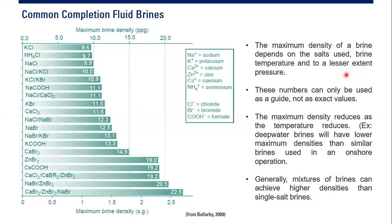The salts govern the maximum density of the brine, along with temperature and pressure to a lesser extent. Remember that these numbers — 9.6, 9.7, and so on — are guides, not exact values. The maximum density will reduce as the temperature reduces. For example, deep water brines will have lower maximum densities than similar brines used in onshore operations due to lower temperatures.